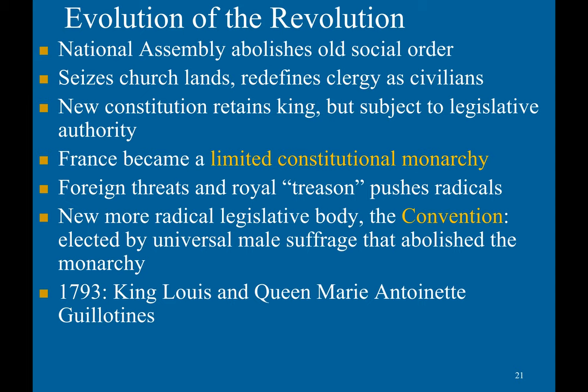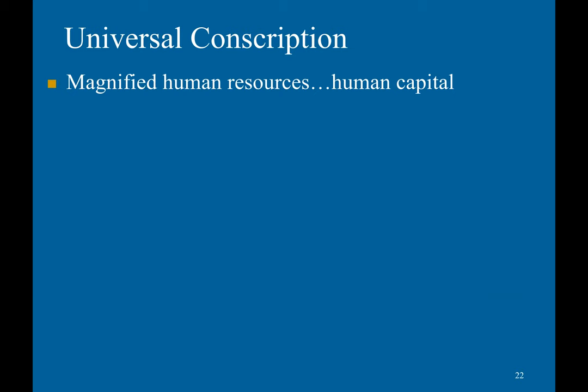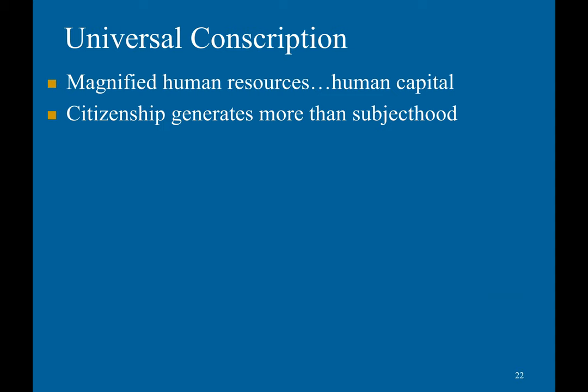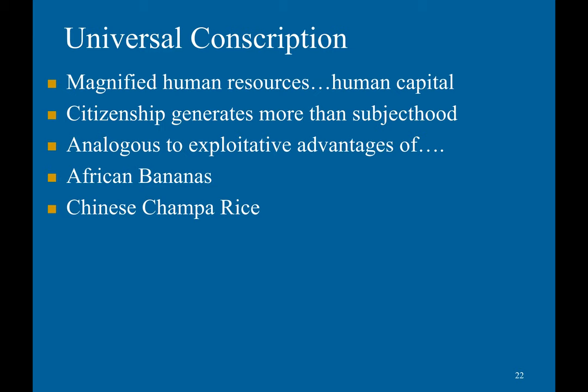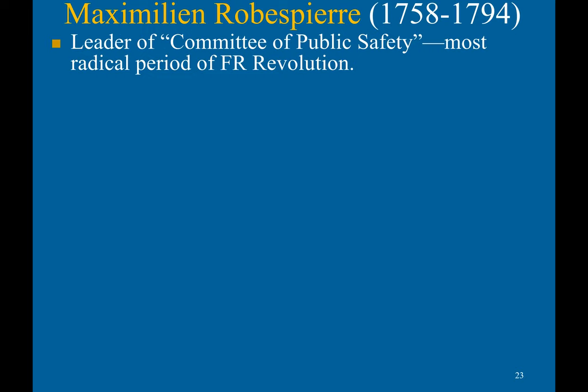The Convention also passes the levée en masse — universal conscription for war — relying on patriotic power. Universal conscription would magnify human resources, as citizenship generated more commitment than mere subjecthood. Maximilien Robespierre became the leader of the Committee of Public Safety, the most radical period of the French Revolution. He was the leader of the radical Jacobins and dominated the Convention from 1793 to 1794. Under him, churches were closed and priests were forced to marry.